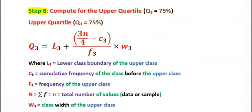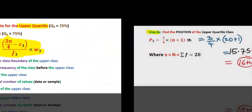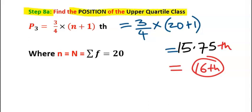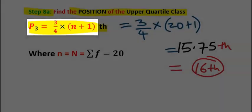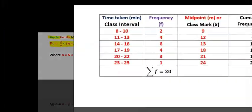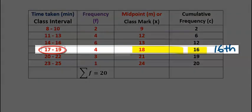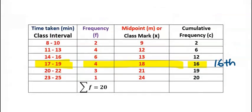Step 8: compute for the upper quartile. Step 8A: find the position of the upper quartile class using this formula. Substituting carefully, we get 15.75, which rounds off to the nearest whole number: 16. From the table, cumulative frequencies are 2, 6, 12, and the 16th position falls in this row. We trace this row, and this becomes our upper quartile class.